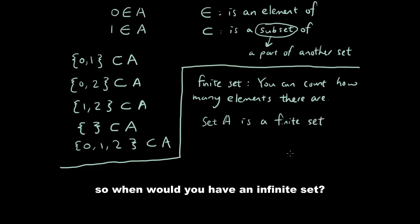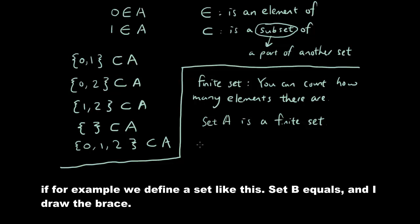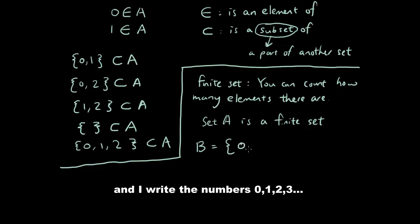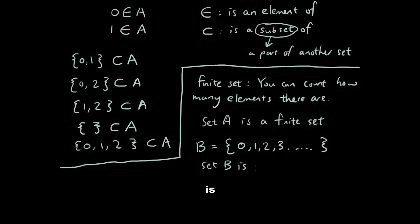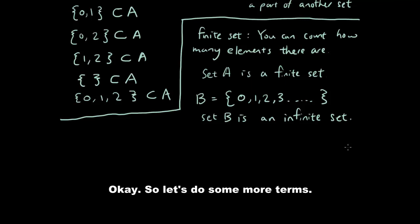When would you have an infinite set? If, for example, we define a set like this - set B = {0, 1, 2, 3, ...}. Why do I put the dot, dot, dot? It means that I'm continuing forever in the same pattern. Set B is an infinite set because it keeps going forever.